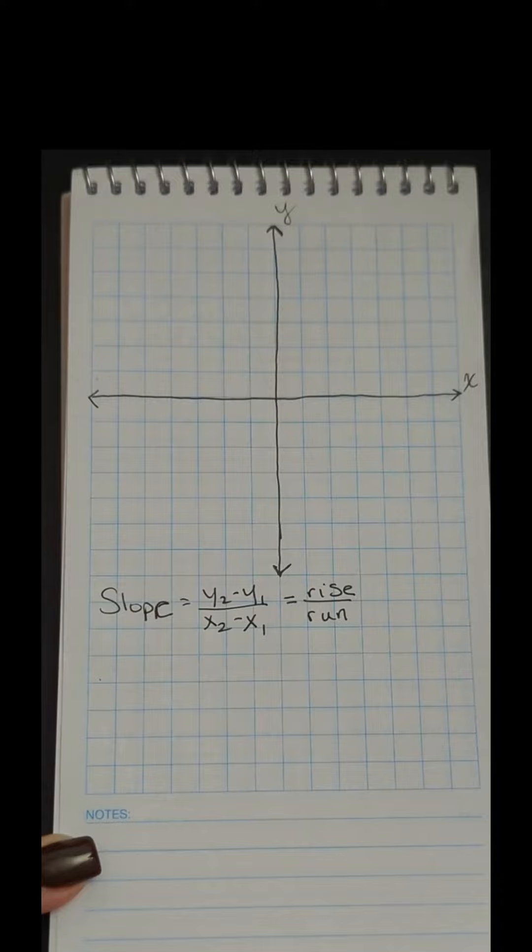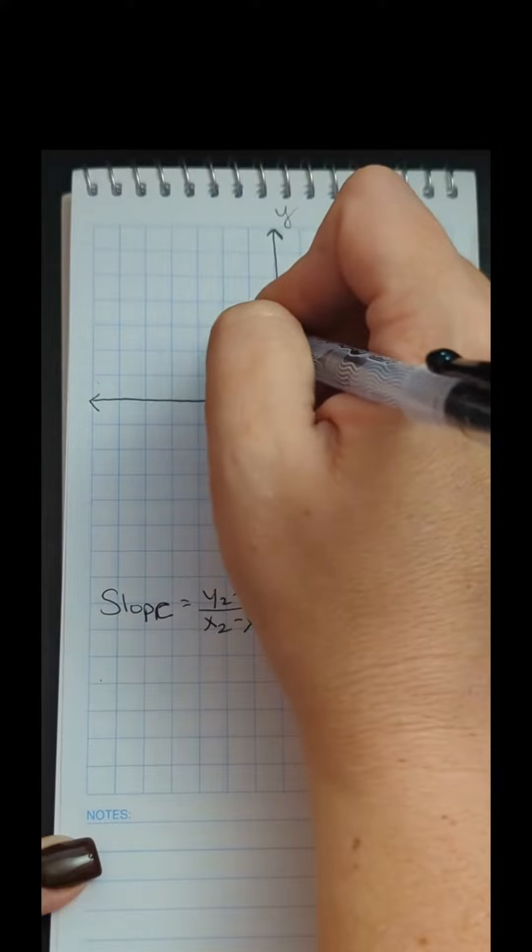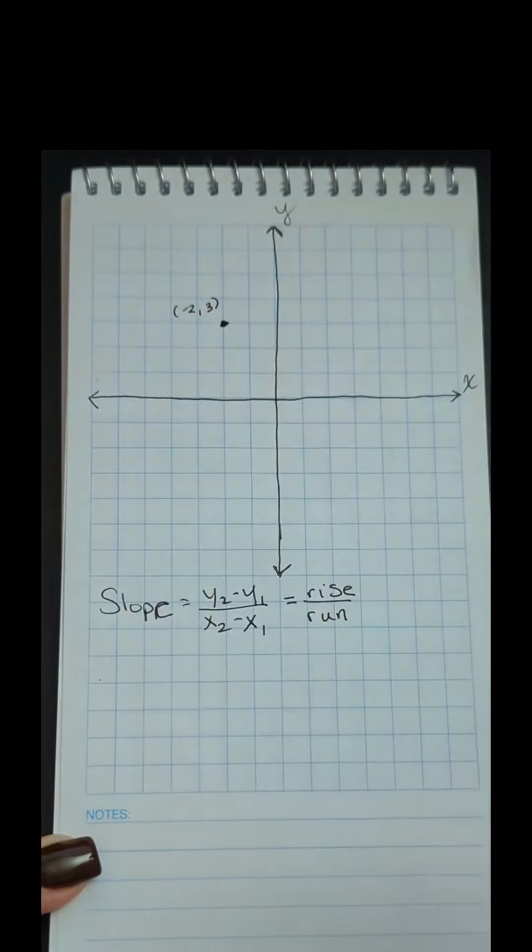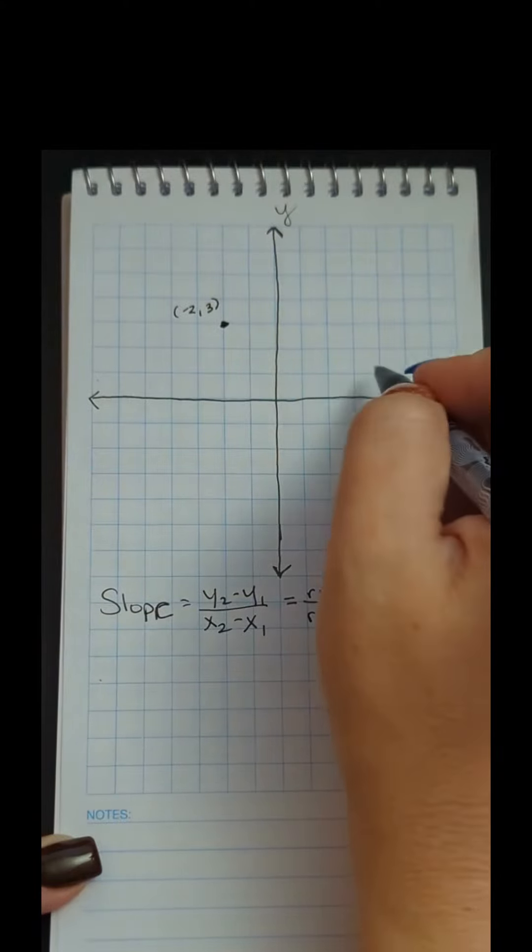For example, let's say that I had two points on the line. Let's say I have a point at negative 2 comma 3, and another point at 4 comma 1.